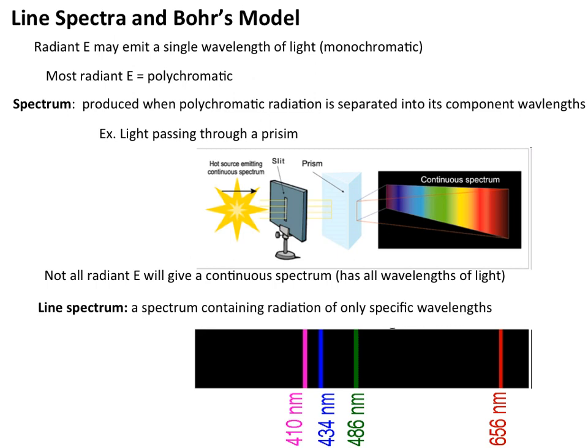In order to understand how Bohr came up with these postulates and how they were supported through experimentation, we need to understand a few things about radiant energy. Most radiant energy is polychromatic, meaning it has a bunch of different wavelengths associated with it. Something like the sun has all the different types of wavelengths present in its radiant energy.